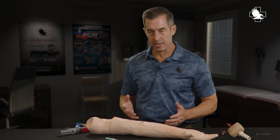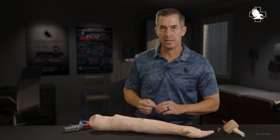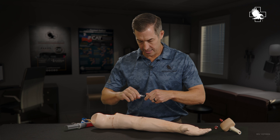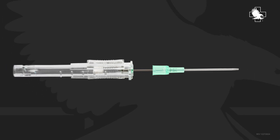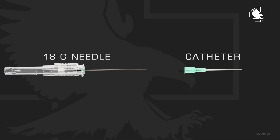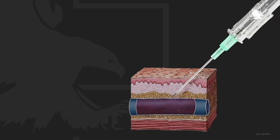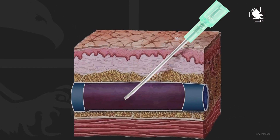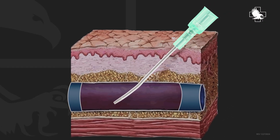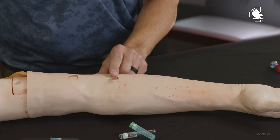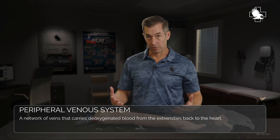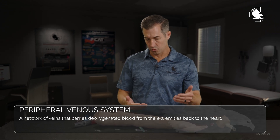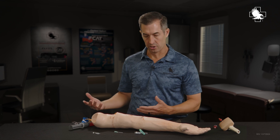The first one is intravenous access. In intravenous access, what I'm doing is I'm taking an IV catheter, which is a plastic catheter that's placed over a sharp needle. That sharp needle goes into the vein along with the catheter. Then the catheter gets threaded into the vein and left in place, which you can see that I've done here. So I've got flow into the peripheral or the outer venous system, which then connects to larger veins and returns to the heart.